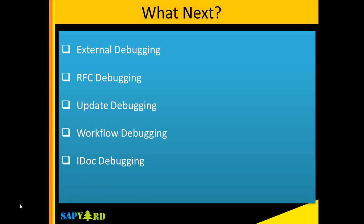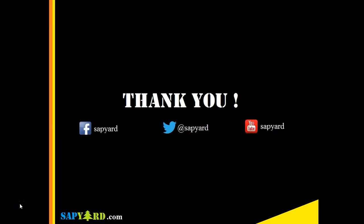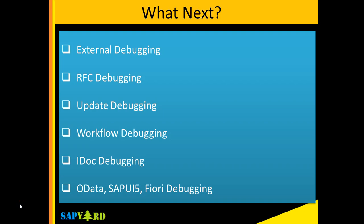You also need to learn how to debug IDOCs. If you are debugging an IDOC from WE19, you need to know the exact function module name and put the debugger, which is easy. If you are debugging an outbound IDOC, you need to know programs like RSNAST00 and RSEOUT00. Using those programs, you can put your debugger in the exact place and debug your outbound IDOCs.